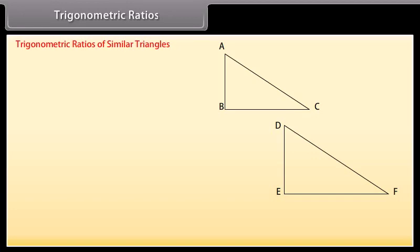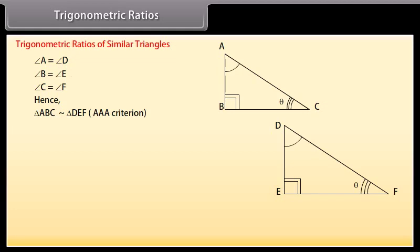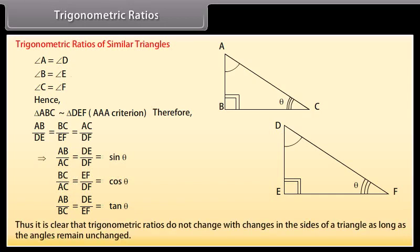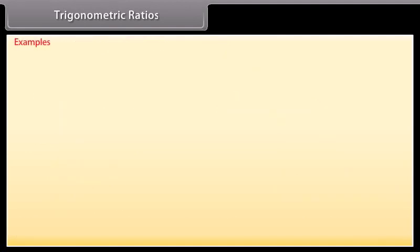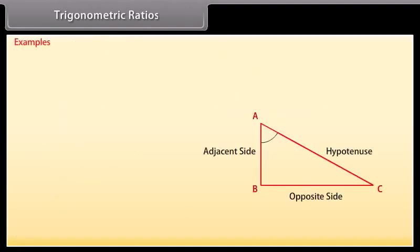Trigonometric ratios of similar triangles. Consider two triangles: triangle ABC and triangle DEF. Angle A equals angle D, angle B equals angle E, and angle C equals angle F. Hence, triangle ABC is similar to triangle DEF by the AAA criterion of similarity. Therefore, the corresponding sides of the two triangles are proportional. Thus, it is clear that trigonometric ratios do not change with changes in the sides of a triangle, as long as the angles remain unchanged.